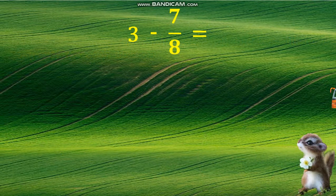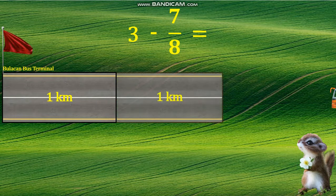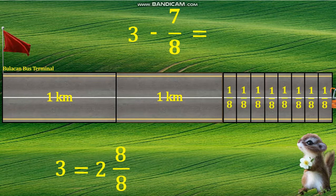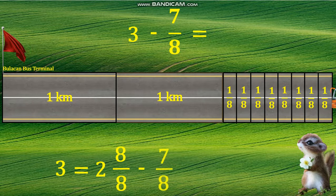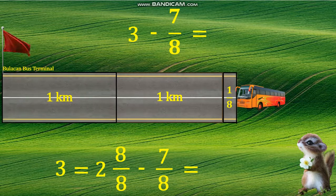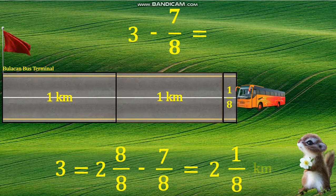To visualize three minus seven-eighths, we have a three-kilometers trip to Bulacan. Rename three as a mixed number by putting partitions to have eight equal parts in one kilometer, and it becomes two and eight-eighths. Now, let's subtract seven-eighths from two and eight-eighths. The bus already travels seven-eighths kilometers, and what was left is two and one-eighth. Therefore, the bus will travel two and one-eighth more kilometers to reach the bus terminal.